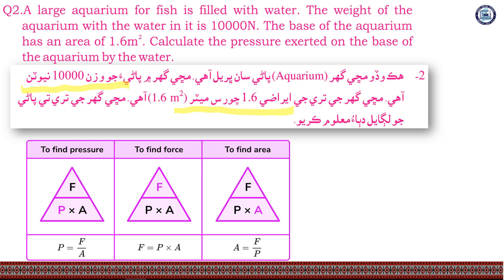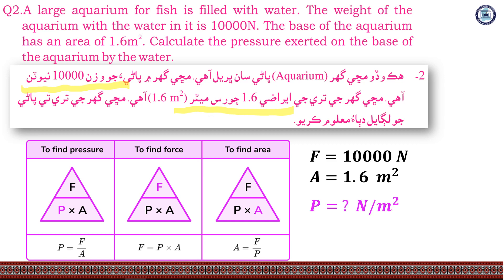The force is 10,000 N and the area is 1.6 square meters. So, the pressure equals 10,000 divided by 1.6. That gives us the pressure value.